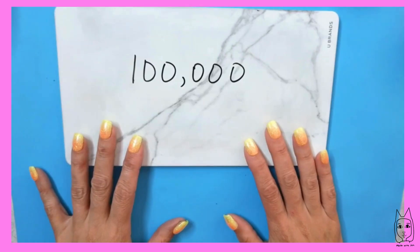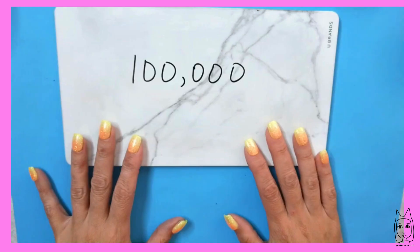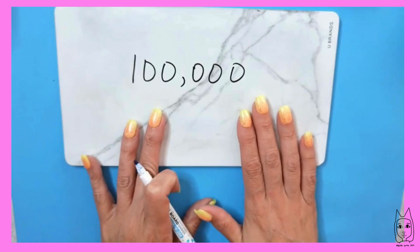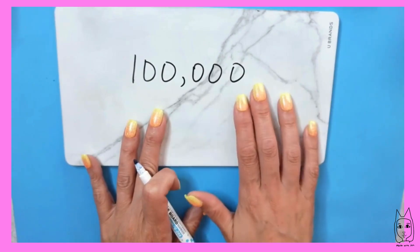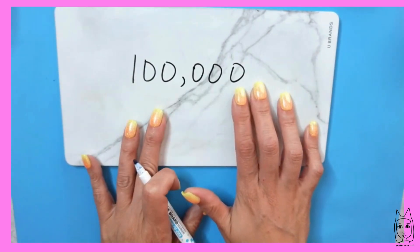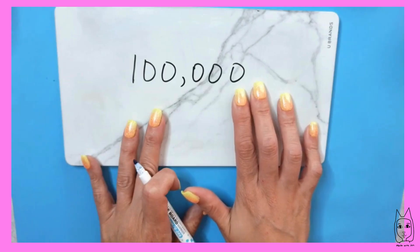Hi, welcome back to Math with Jen. Today we are going to be looking at place values up to 100,000. We are going to talk about place value going from right to left, because the rightmost place value is the smallest value for that number.